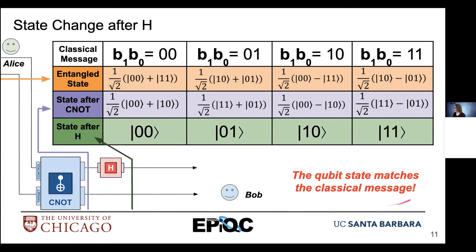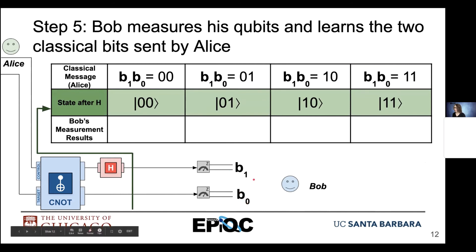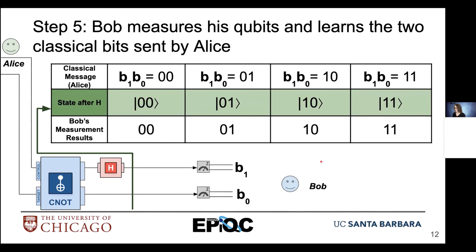We can take note that the resulting state is equal to the classical message that Alice wished to send. Step five: Bob has two qubits and turns that qubit information into classical information by performing measurement. Bit 1 is on the top line and bit 0 is on the bottom line, and Bob's measurement results are equal to the message that Alice originally sent.